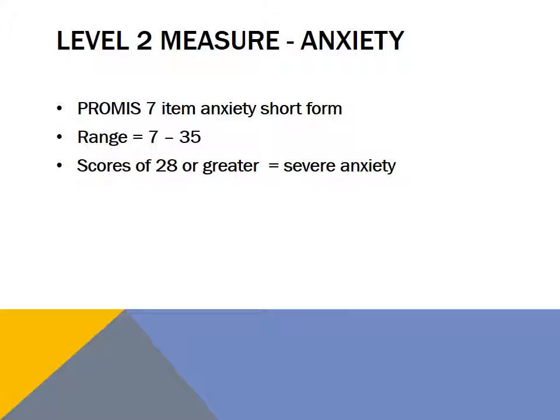Three items from the Level 1 measure are used to indicate the need for further inquiry. These items ask about feeling nervous, anxious, frightened, worried, or on edge; feeling panic or being frightened; and avoiding situations that make you anxious.